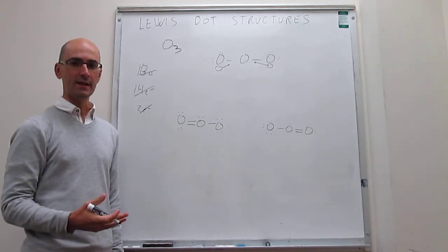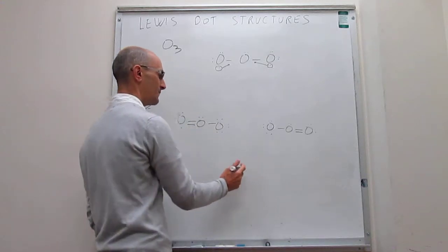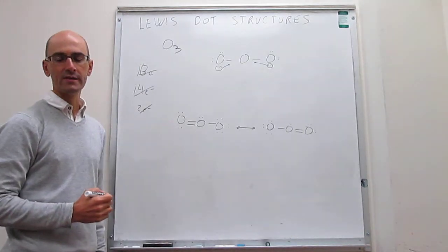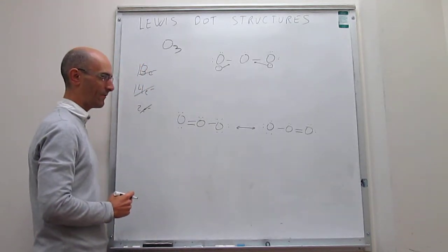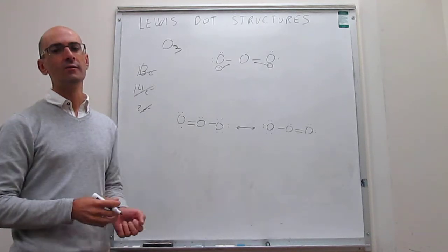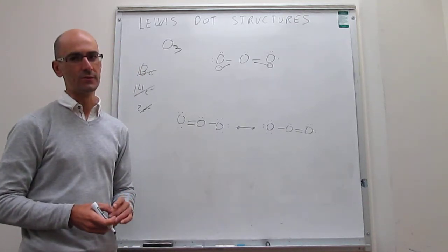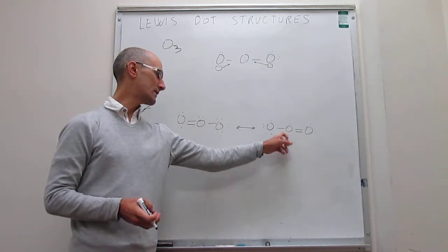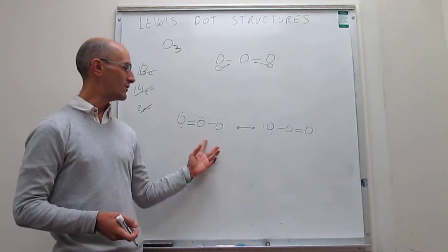Notice that the probability that each one of these two structures is real is actually the same — there's no reason one should be more prevalent than the other. When you have Lewis dot structures like this that are both possible, they are called resonance structures, and we denote them using a double-headed arrow between the structures. These represent extreme Lewis dot structures; what happens in reality is an average between the two.